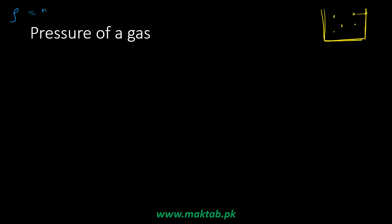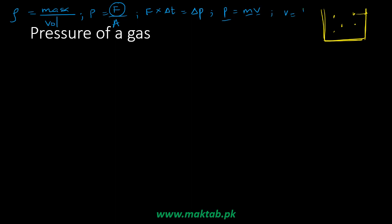We want to derive the pressure expression quickly because there are some things important from the MCQ point of view. For this, we use some key relationships: density is mass over volume, pressure is force per unit area, and force relates to change in momentum over time — this is called impulse. Momentum is mass times velocity.